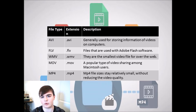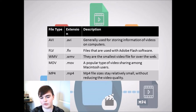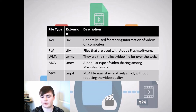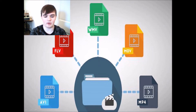AVI files are generally used for storing information in videos on computers. FLV files are used with Adobe Flash software. WMV files are the smallest video file type over the web. MOV files are a popular type of video sharing among Macintosh users. And MP4 files stay relatively small in size without reducing the video quality. Now I will go into better detail about each of them.